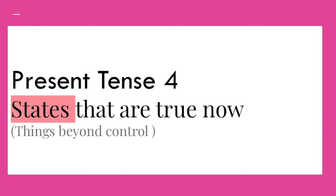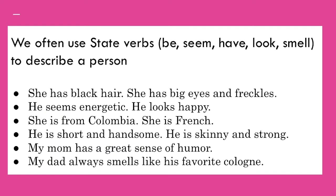The last use I want to look at is states — states that are true now. What is a state? A state is not an action, something you do. A state is something beyond your control. For example, I am short. I have brown eyes. I can't control those things; they're true whether I want it to be true or not. Those are states, and because they're always true, we often use them to describe a person.